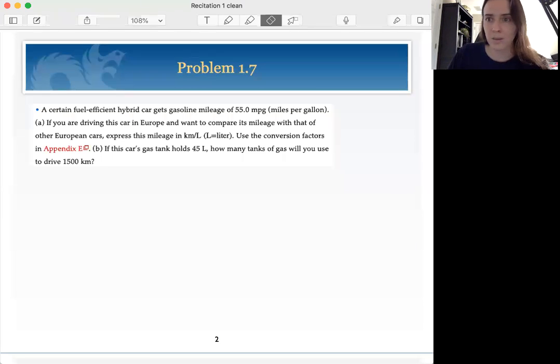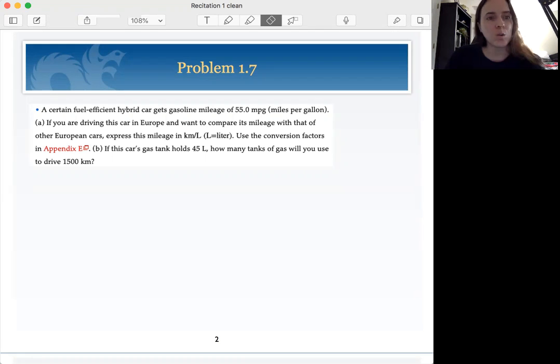All right. Guten tag, everybody. We're back with problem number 1.7. So we have a certain fuel-efficient hybrid car that gets gasoline mileage of 55 miles per gallon. If you are driving this car in Europe and want to compare its mileage with that of other European cars, express this mileage in kilometers per liter. Use the conversion factors in Appendix E. If this car's gas tank holds 45 liters, how many tanks of gas will you use to drive 1,500 kilometers?